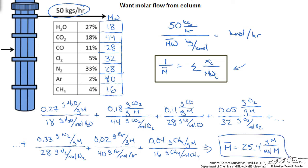So what do we do with this? We are going to go back to our original problem statement and take our 50 kilograms an hour and plug this in, making sure the units are correct, and we can calculate what our molar flow from the column is. I get 1.97 kilomoles per hour exiting the column. Now that we have calculated the molar flow rate we could use that to determine the volumetric flow rate by using an ideal gas law.